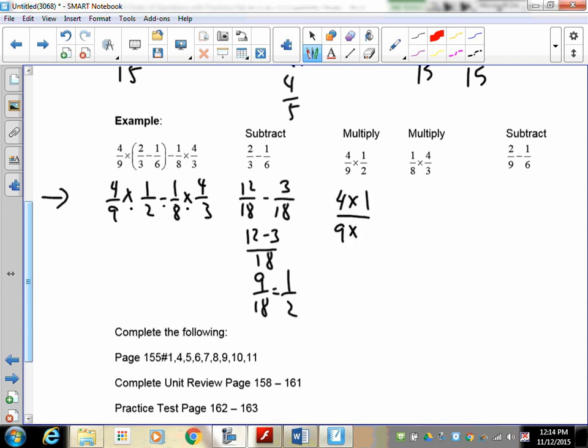Four times one is four, nine times two is eighteen, and that is 2/9 when you reduce it. Okay, so 2/9 is the result of this multiplication. I have yet to do the subtracting of 1/8 or the multiplying of 4/3.